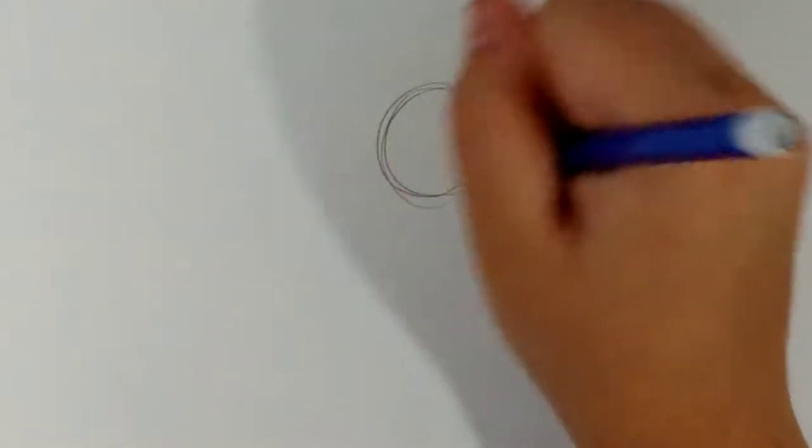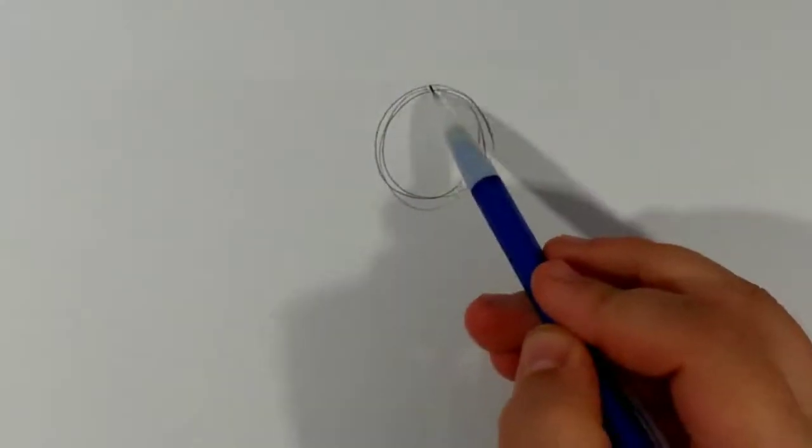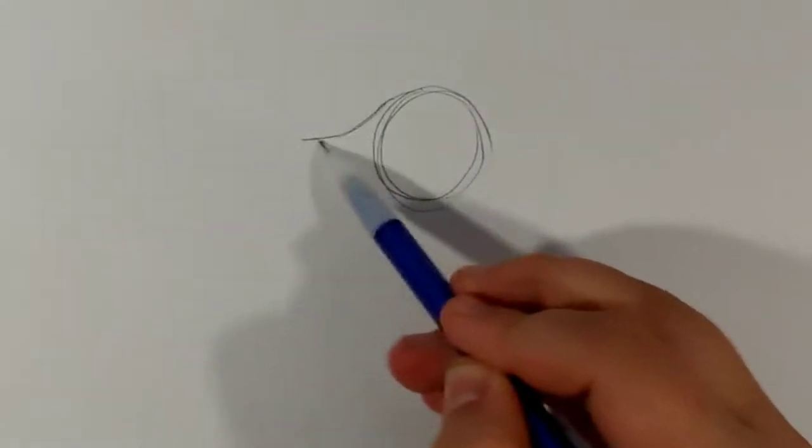So first we're going to start off with a small circle to define the head. This is how I start with all of my horses, and then we just swoop down.